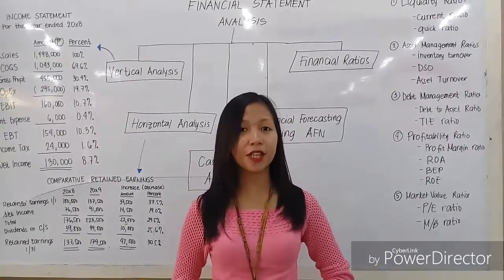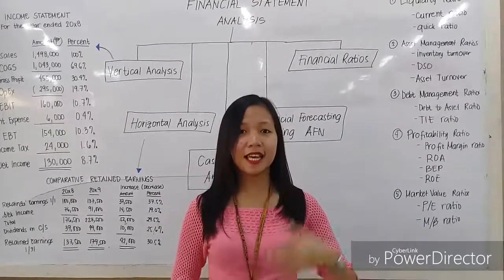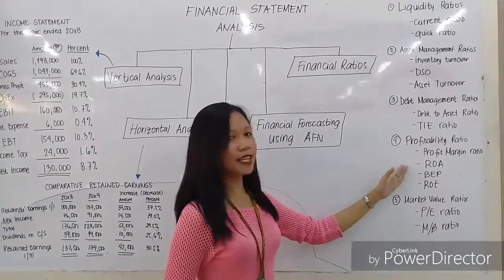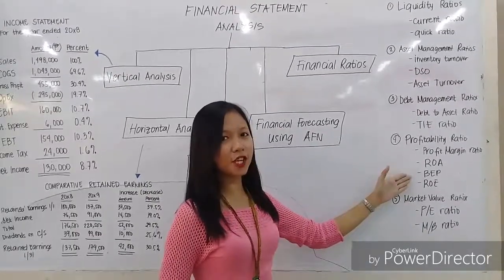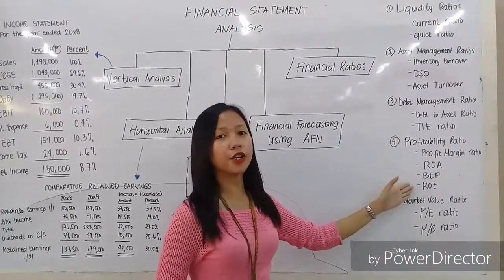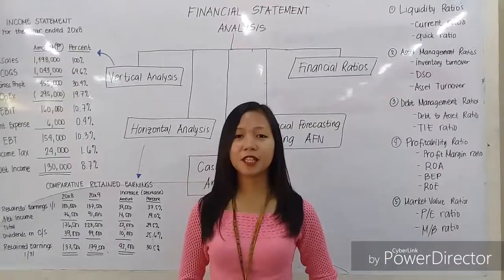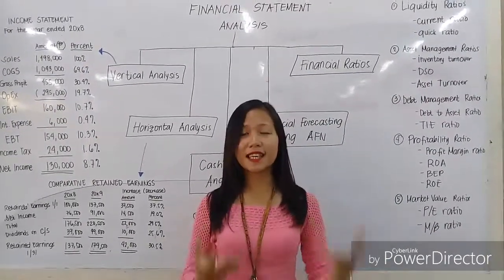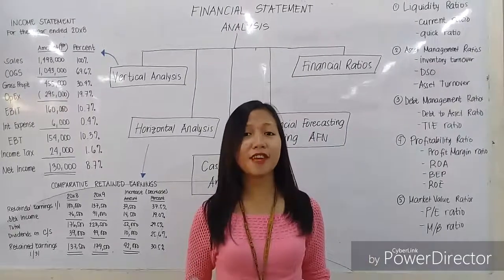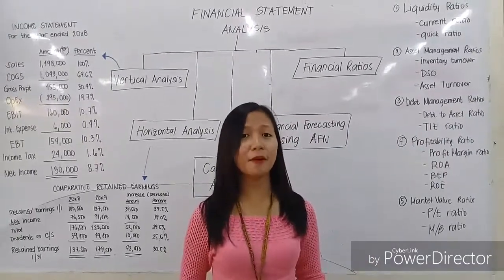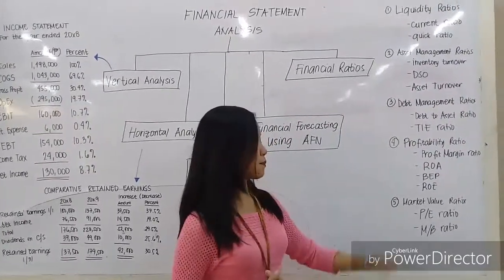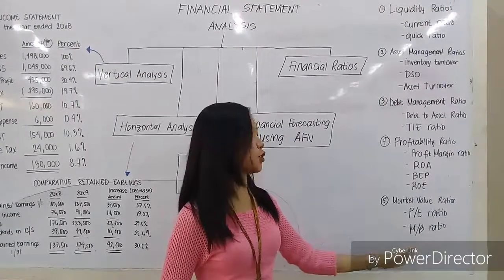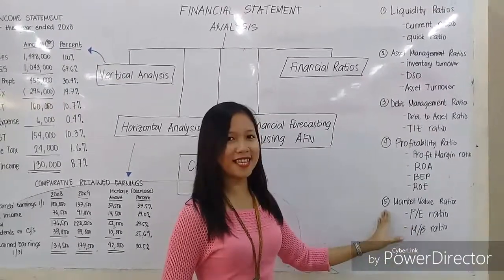The fourth category is the profitability ratio, which shows how efficiently the firm is operating and utilizing its assets — including the profit margin ratio, return on assets ratio, basic earning power, and return on equity ratio. The fifth and last is the market value ratio, which gives an idea of what investors think the firm is worth, with ratios such as the price to earnings ratio and the market to book ratio.